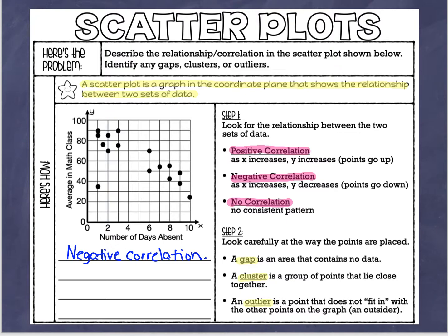Let's identify these three things in this graph. For the gap, I'm looking for an area with no points, and this area right here — I'd call that a gap. For the cluster, I'm looking for points lying close together. This group right here looks like a cluster to me because there are quite a few points all together. There might be another cluster down here too, but these seem a little tighter.